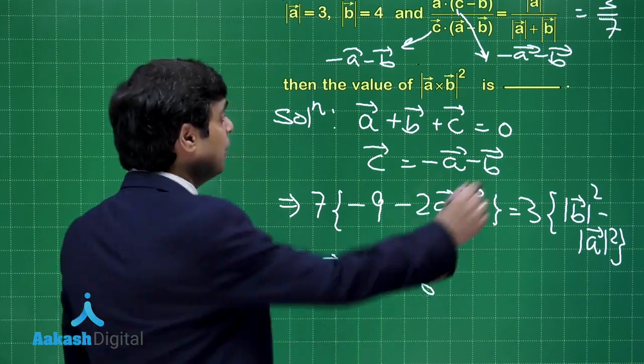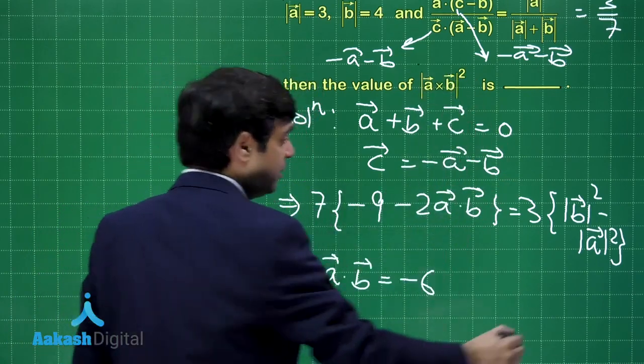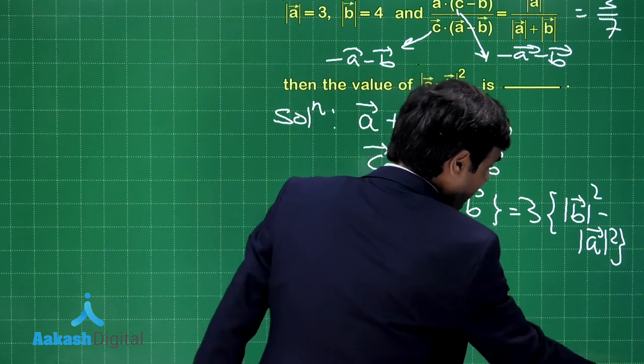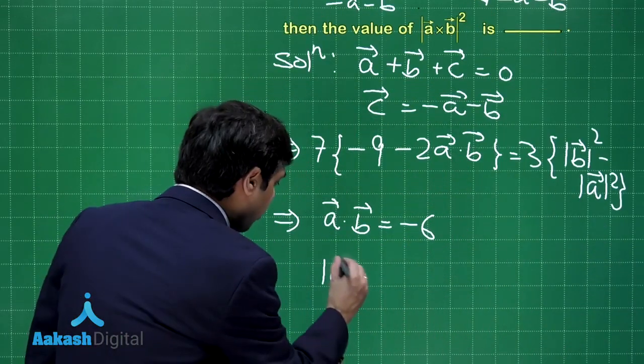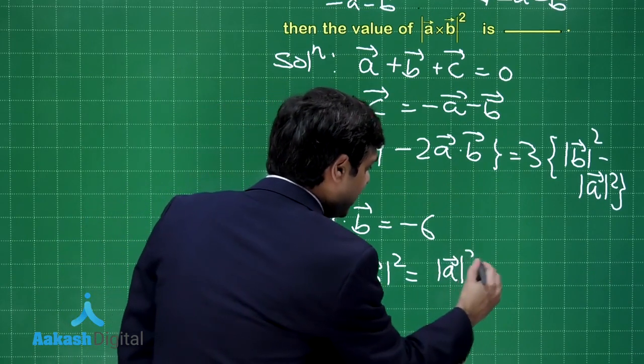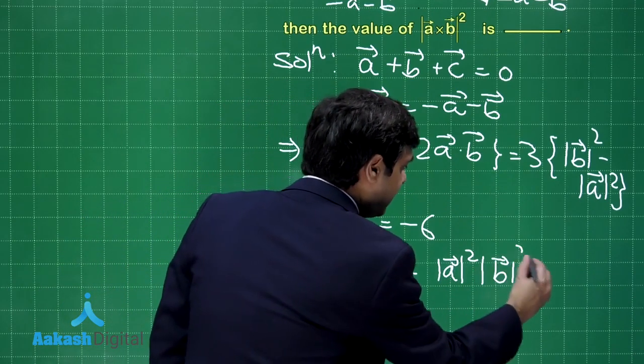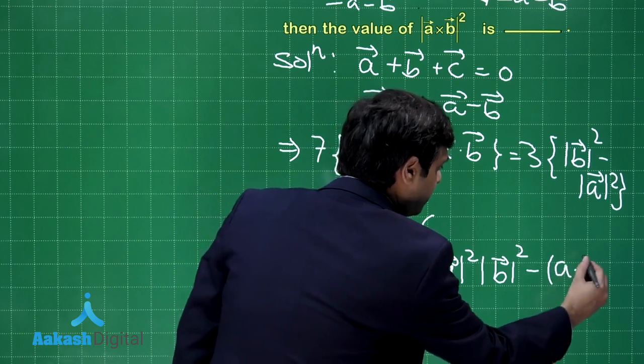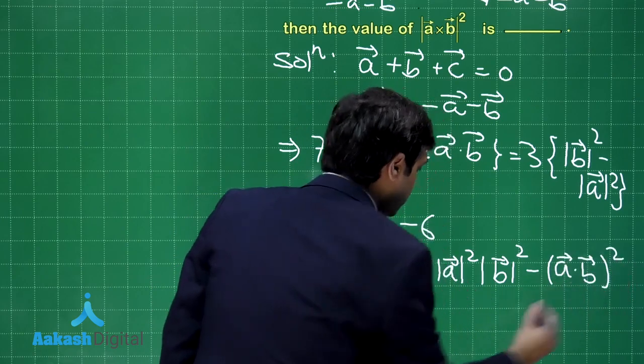Let us write down. Modulus of A cross B whole square is mod A square mod B square minus A dot B whole square.